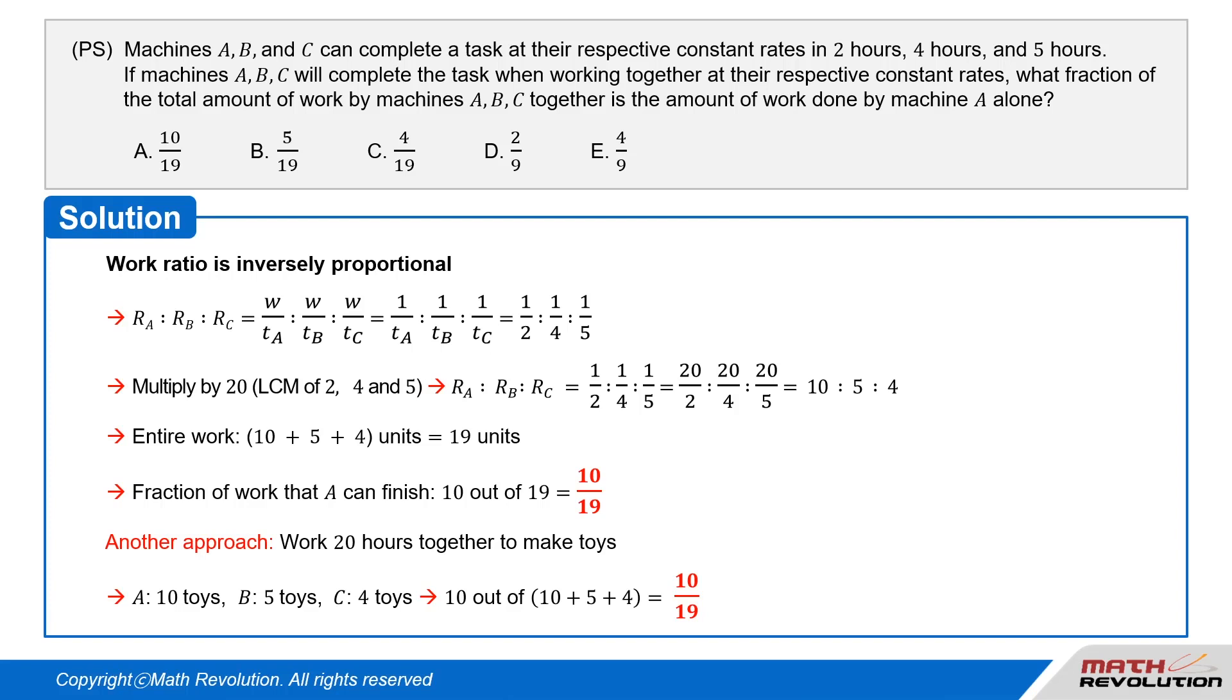This means that A makes 10 toys, B makes 5 toys, and C makes 4 toys. That also indicates that 3 machines make 19 toys together during that time, adding 10, 5, and 4.